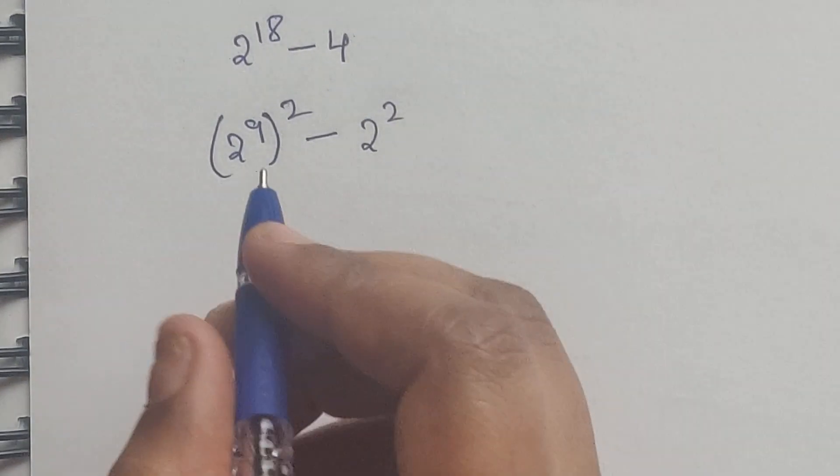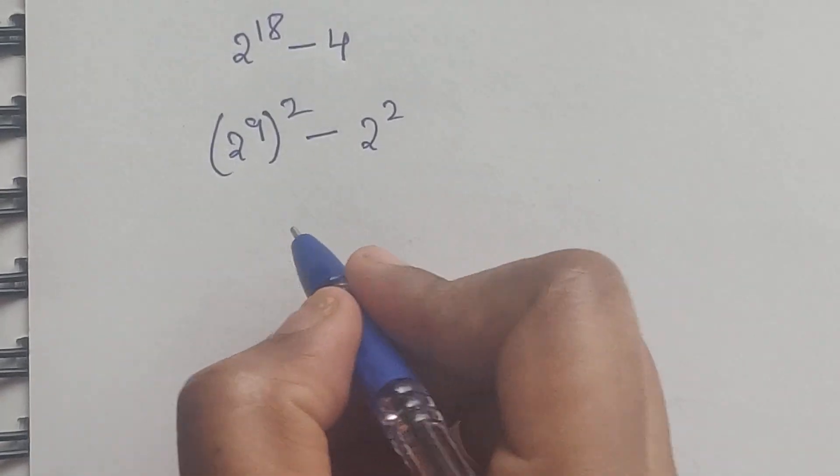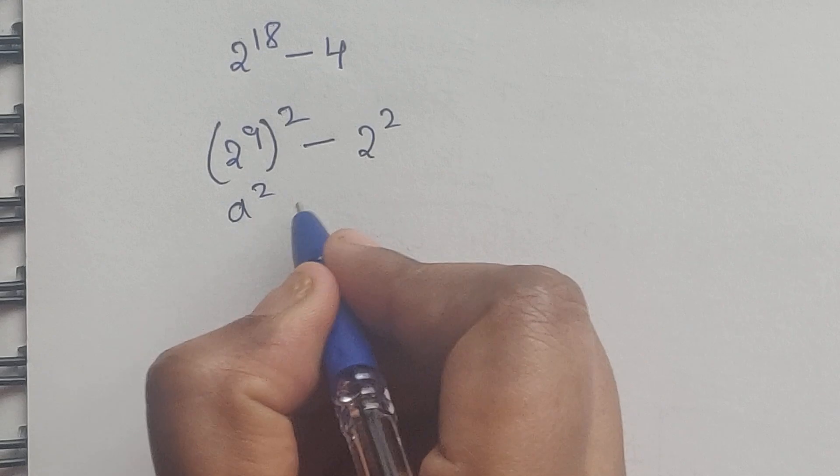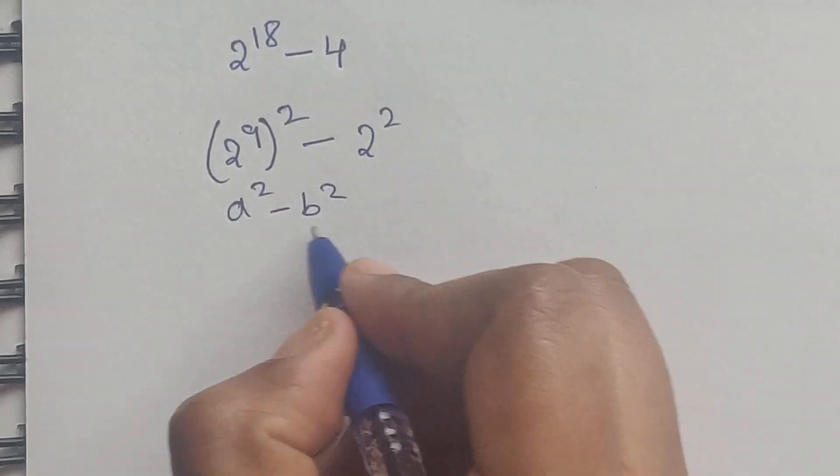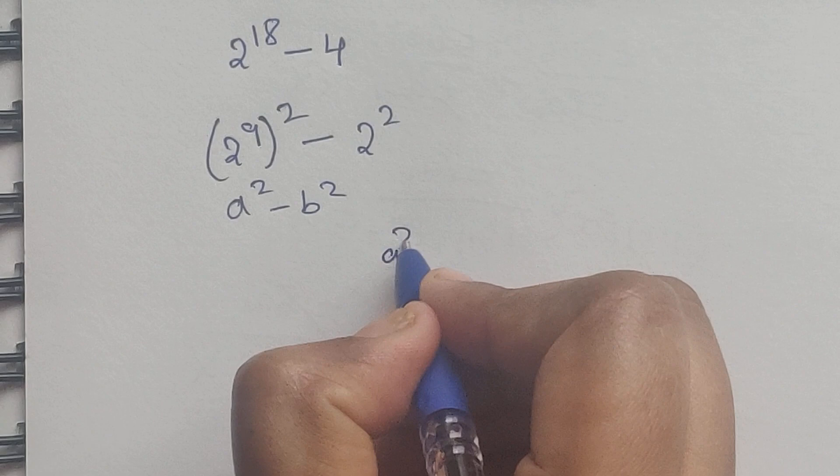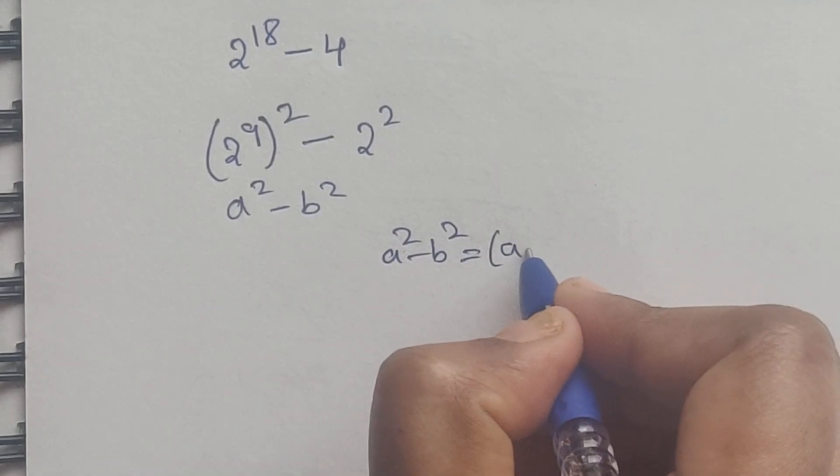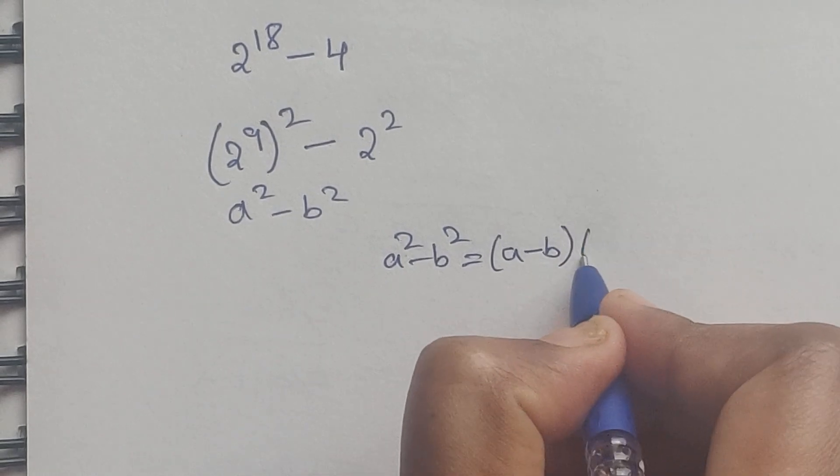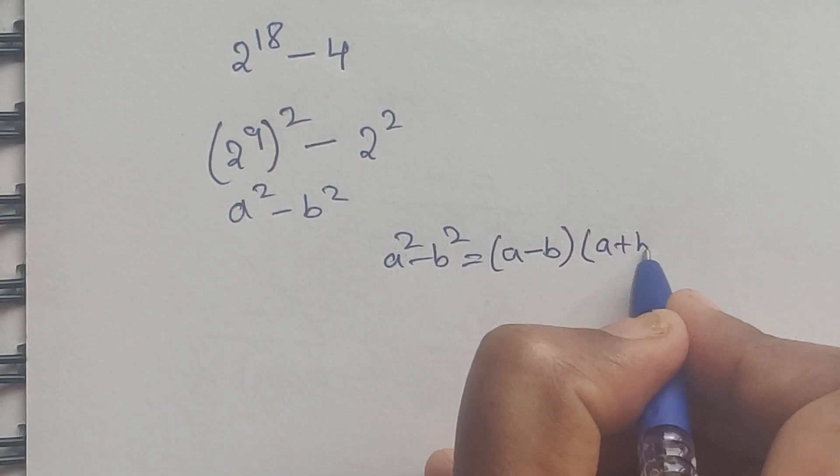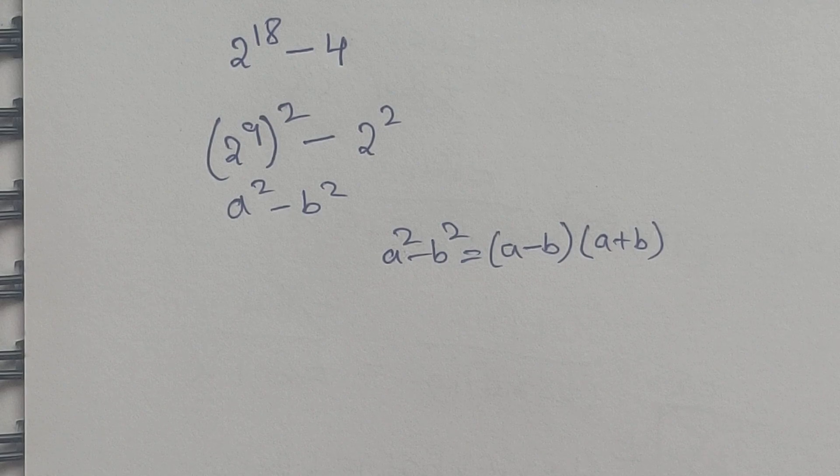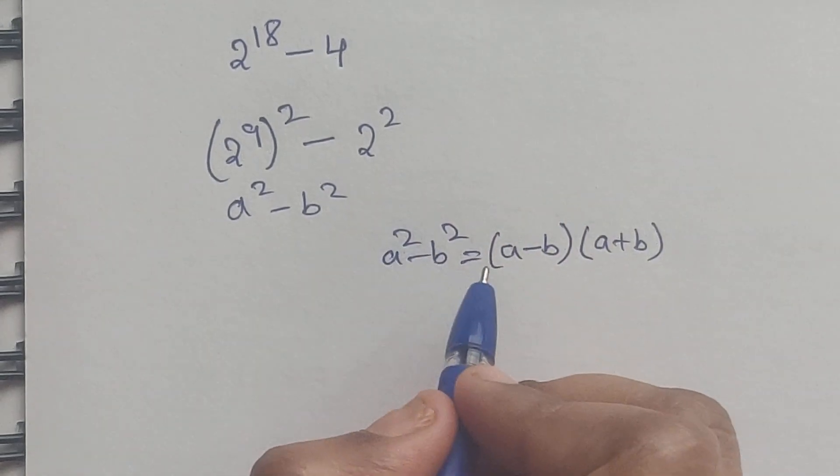So now this is in the form of a^2 minus b^2. We know the formula: a^2 - b^2 = (a - b)(a + b). This is the formula we'll use.